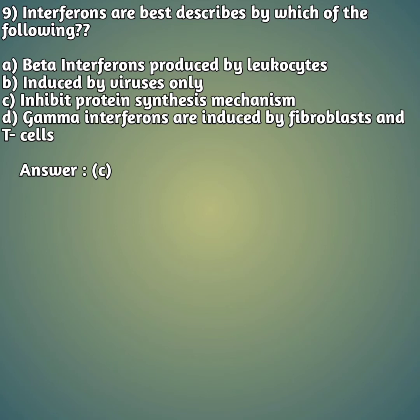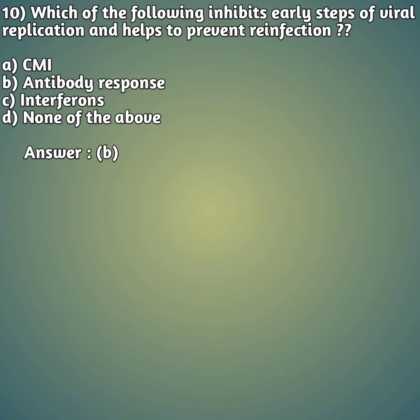Ninth question: interferons are best described by which of the following? Option A: beta interferons are produced by leukocytes. Option B: induced by viruses only. Option C: inhibit protein synthesis mechanism. Option D: gamma interferons are induced by fibroblasts and T cells. The right answer is C — interferons inhibit the protein synthesis mechanism.